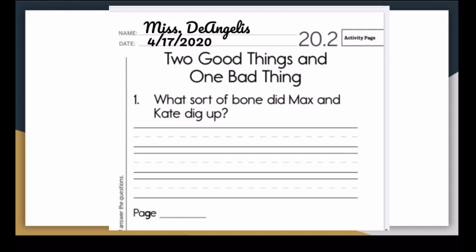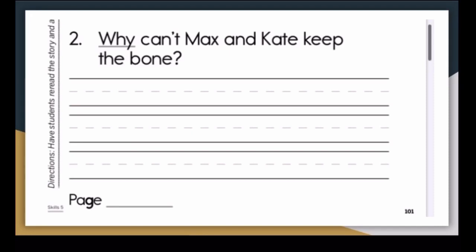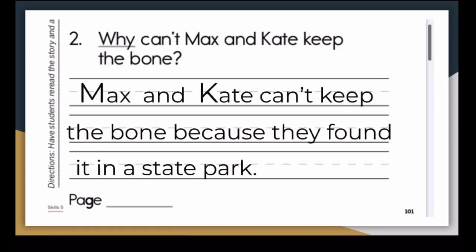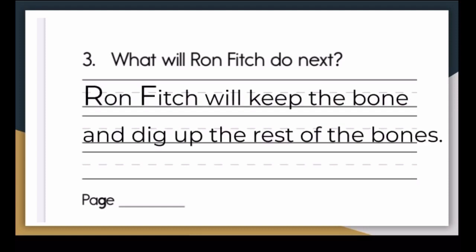Now we're going to answer our comprehension questions. Make sure you write your name and your date like I did. Number one. What sort of bone did Max and Kate dig up? Remember, we have to do complete sentences. Max and Kate dug up a T-Rex bone. Pause the video so you can write neatly and take your time. Remember, Max and Kate can't keep the bone because they found it in a state park. Number three. What will Ron Fitch do next?